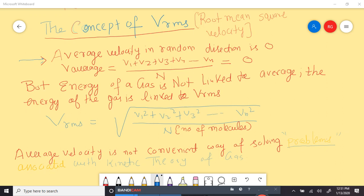The expression for pressure, the expression for kinetic energy. And if we start using average velocity, we will run into difficulty because the average velocity of all the molecules at any given instant of time will be zero. So, which will mean the pressure will become zero, the kinetic energy will become zero.